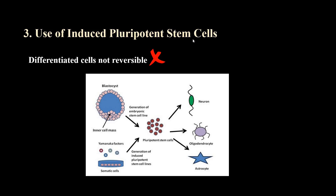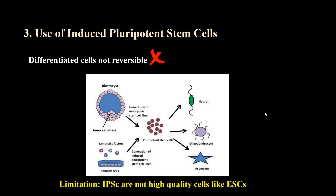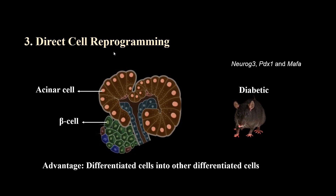Researchers are also working on iPS cells obtained from adult cells of patients with different kinds of genetic diseases, with the hope that these genetic diseases will be cured in the future. There is no ethical issue with using iPS cells for research. However, the problem is that iPS cells are not as high quality as embryonic stem cells, and when we culture induced pluripotent stem cells for many generations, we observe different genetic abnormalities in iPS colonies.